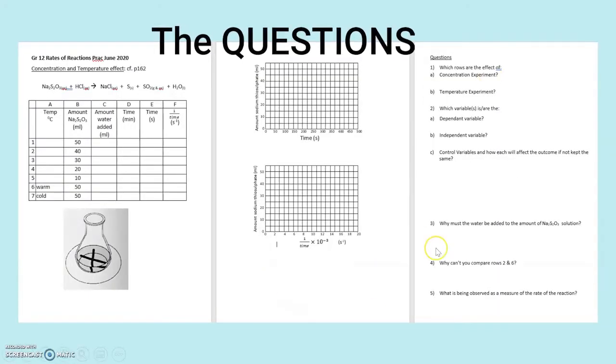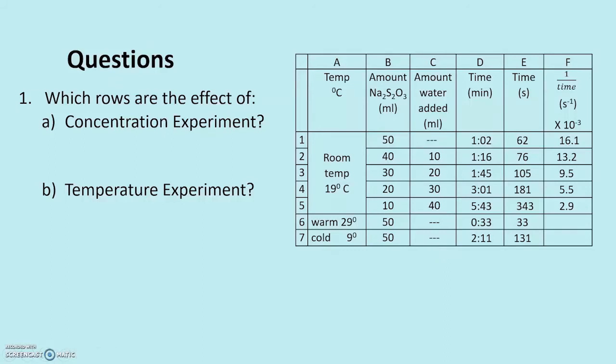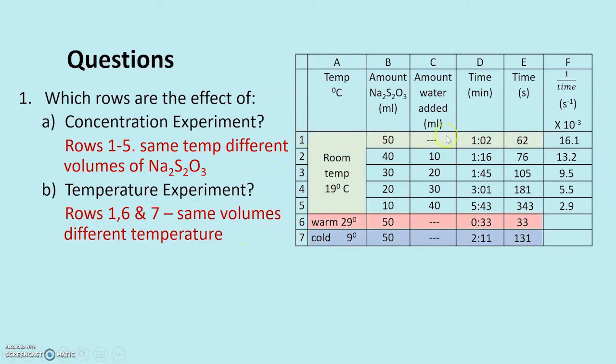Now for the questions. Looking at them one at a time. Which rows are the concentration experiment? It's these first five that we plotted the graphs for. Notice that the temperature is the same for all of them and it's the concentration or volume of the sodium thiosulfate that was different. The temperature experiment? Well, we're comparing the first one with the last two. Notice the volume is the same for each, but the temperature is different.